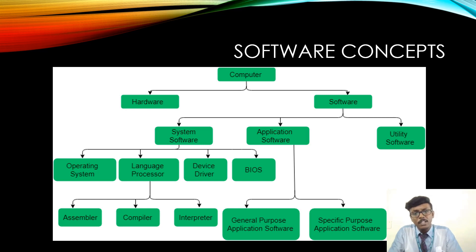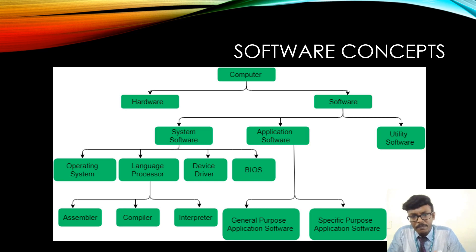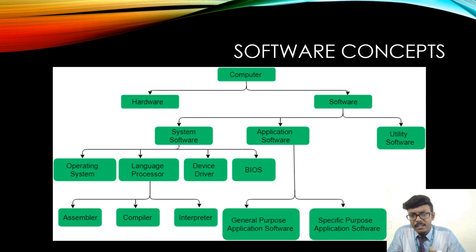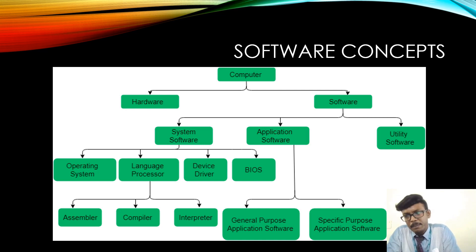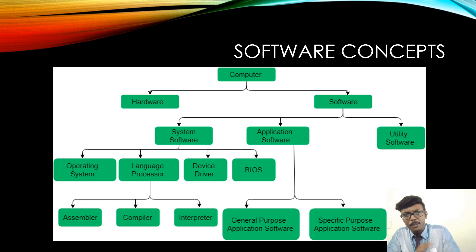When we talk about application software, these are software used to accomplish a particular task. They are dedicated software to perform some simple or unique task. For example, a single software cannot serve both a reservation system and a banking system — for banking we need banking-specific software. Based on the category, there are two types: general purpose application software and specific purpose application software. General purpose application software is ready-to-use, manufactured by a company.